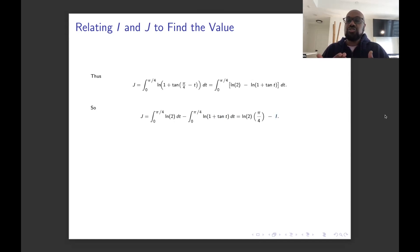But by our symmetry argument, we talked about the fact that j and i, these two integrals, are actually exactly the same thing. So we can write that i is ln(2) times π/4 minus i. And so we move the i to the other side, divide by 2 to get that i is π/8 times the natural logarithm of 2.